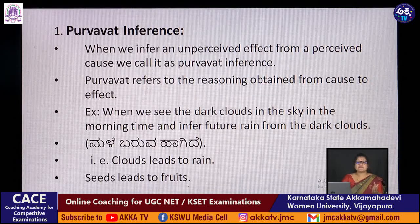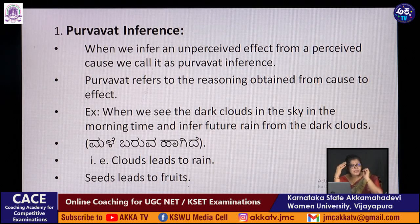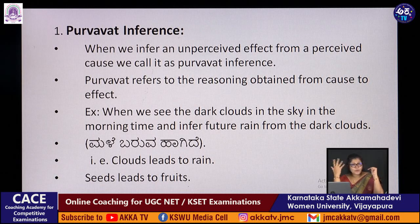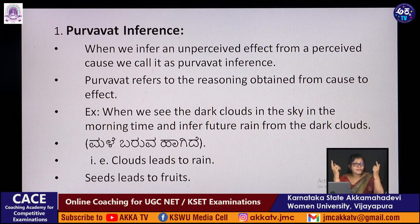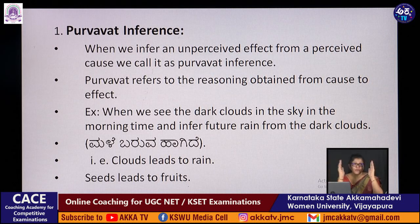Purvavat inference: we infer an unperceived effect from a perceived cause. The cause is known but the effect is not yet seen. For example, when we see dark clouds forming, we think it may rain — rain is the unperceived effect, while clouds are the perceived cause. Similarly, a seed leads to fruit: we plant a seed (the cause) and infer it will produce fruit (unperceived effect). This is called purvavat inference.